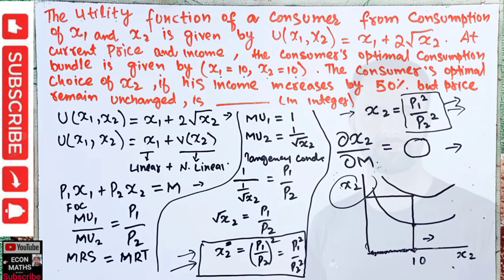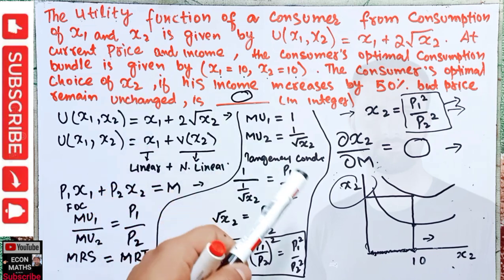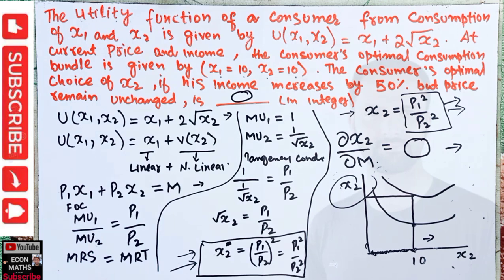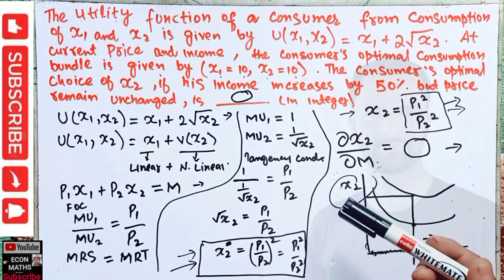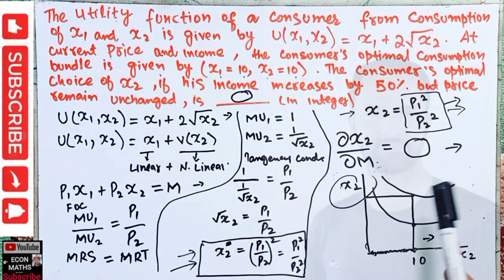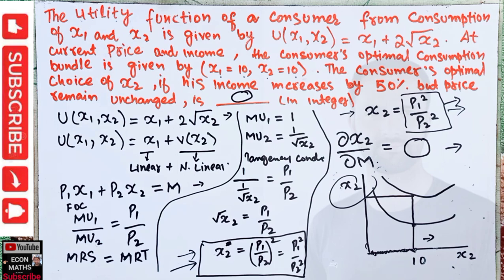So the answer is: there will be no change in the consumption of good x2 when the consumer has already reached the critical point of x1 = 10, x2 = 10, because any further increase in income leads to zero increase in x2 consumption. If the question had asked about x1, we could solve for that as well. I hope this is clear — thank you, and if you like this series please share and subscribe.